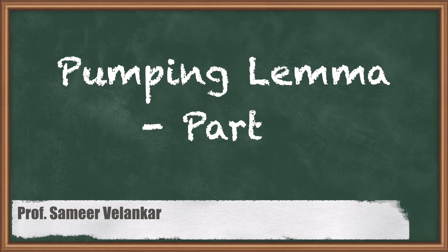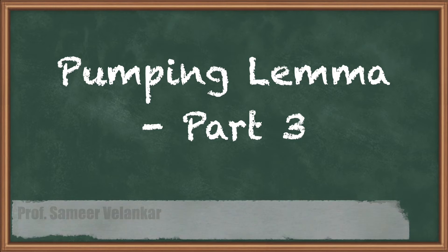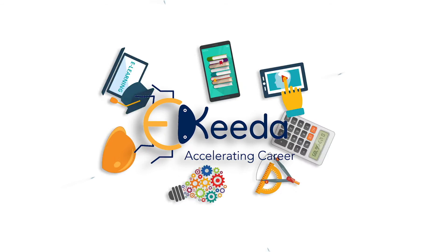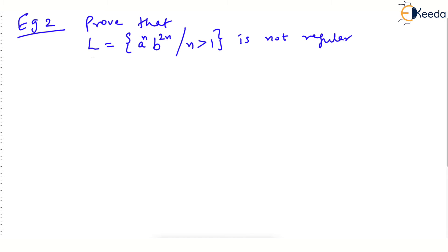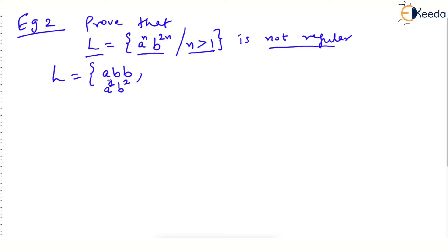Hello dear students, let's see the third video on the pumping lemma topic. What we have to prove here is that the language L of the form a^n b^{2n} such that n is greater than 1 is not regular. The strings in this language have a's in the leading part and b's in the lagging part, where the number of b's is twice the number of a's. For example, one a gives two b's, two a's give four b's, three a's give six b's.